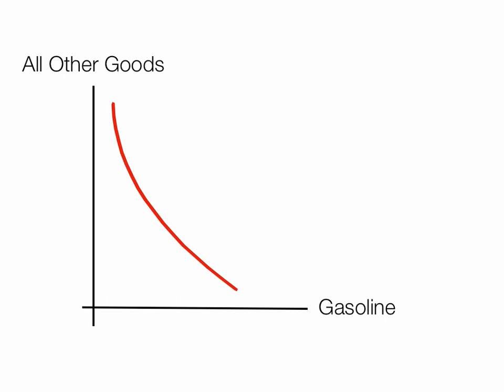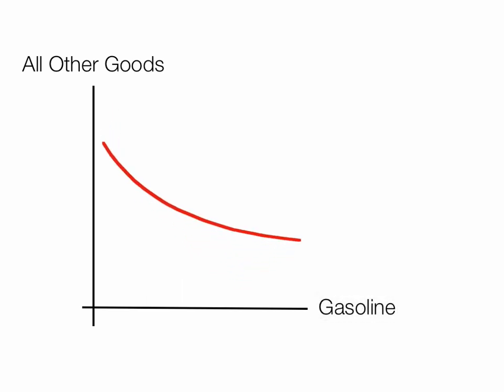An indifference curve that's steep and up and down, like this one, represents a person who prefers gasoline over all other goods — or it may be that they're stuck in that situation and are willing to trade less gasoline. On the other hand, a curve that's more flat means that they prefer all other goods, or the item on the y-axis.